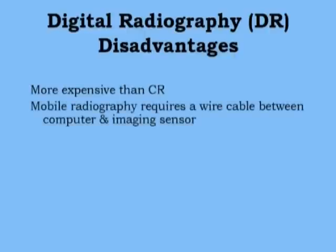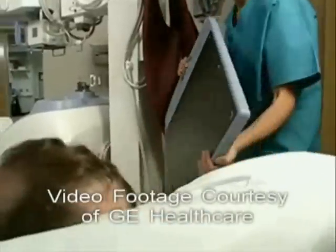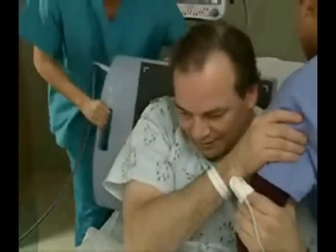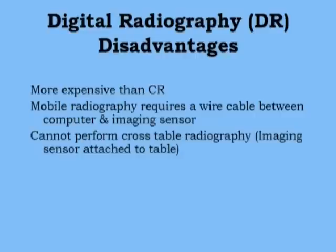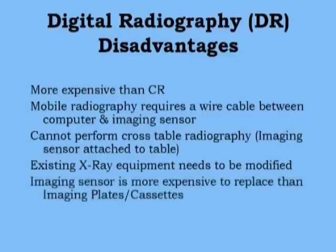CR is much less expensive. And the fact of the matter is, at this point in time, the literature does not really differentiate from a quality standpoint the digital product from DR and the digital product from CR — the products are felt to be of equal quality. Mobile DR is not wireless. Cross-table radiography is difficult. Existing x-ray equipment must be modified. DR replacement parts are more expensive. There is an initial steep learning curve, and the technology can become quickly outdated with difficult repairs.